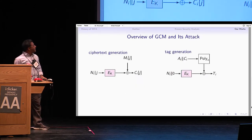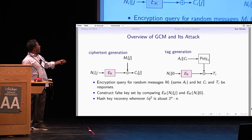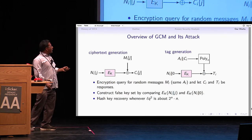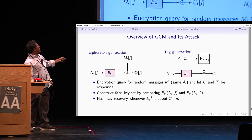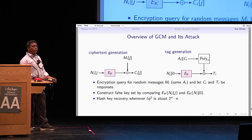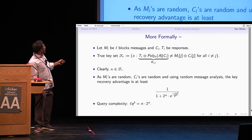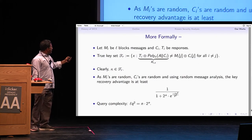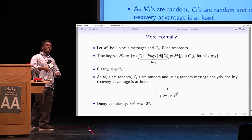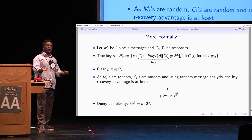For the GCM extension: GCM has a ciphertext generation part and a tag generation part. The tag generation part is exactly the WCS MAC where data and ciphertext are authenticated. You can construct a false key set by comparing these values — the M_i and C_i are observed query values, and the expression can be written as a polynomial hash plus T_i. The same analysis applies: under random messages, the expected true key set size gives the same bound, and you can exploit message length L, requiring L·Q² of order N·2^n.